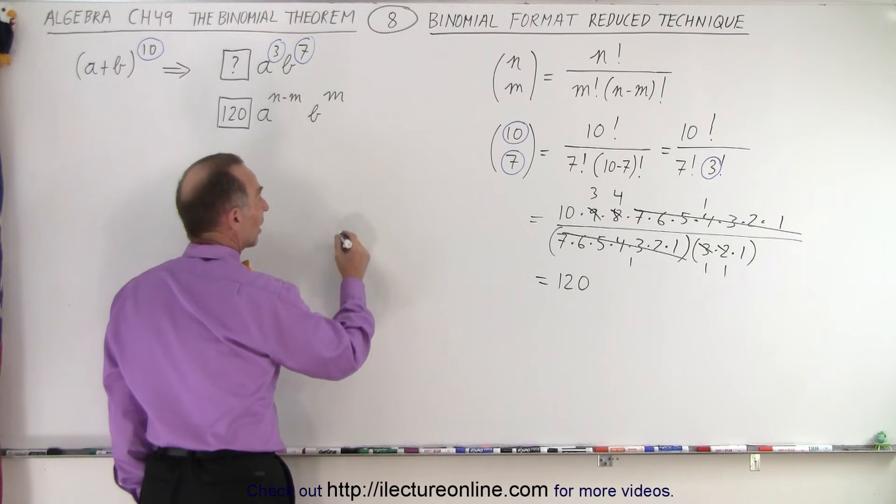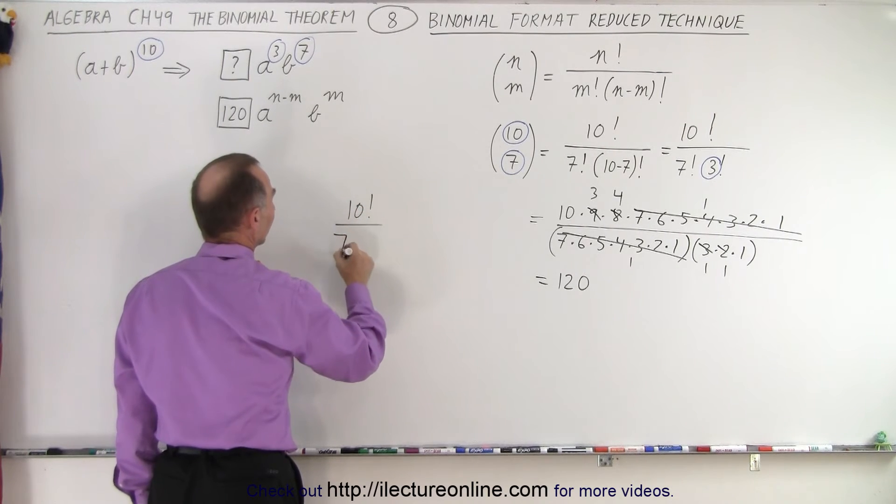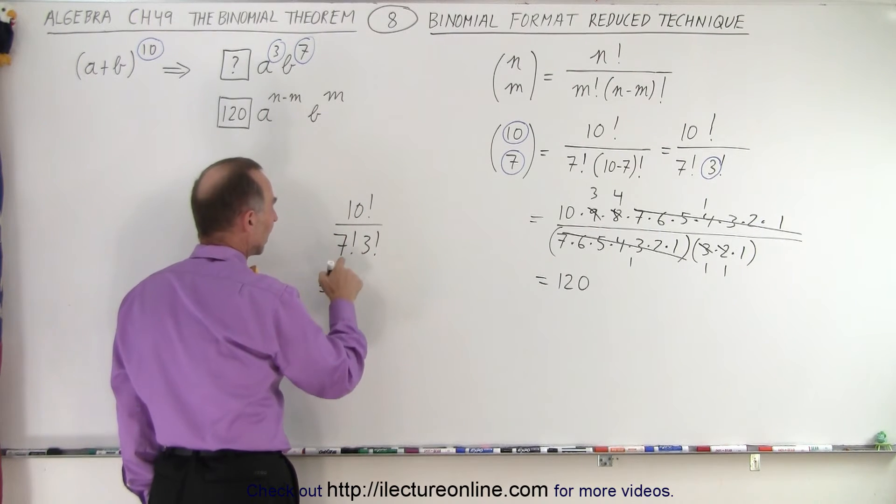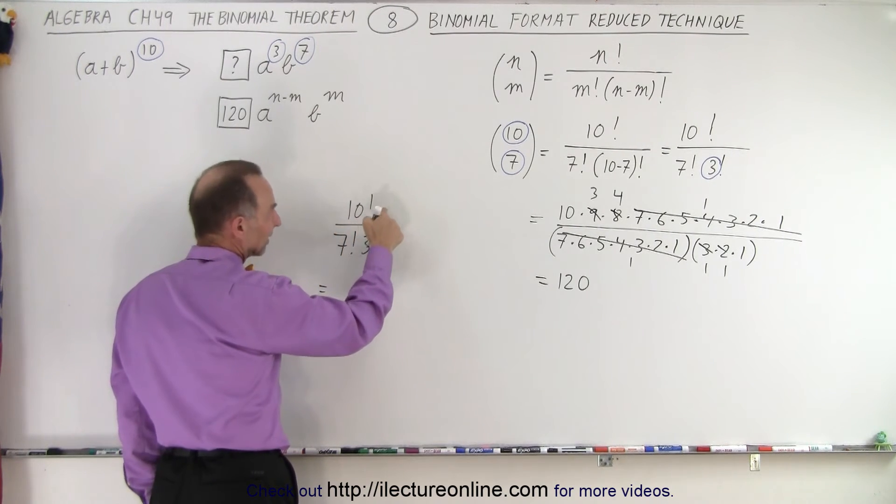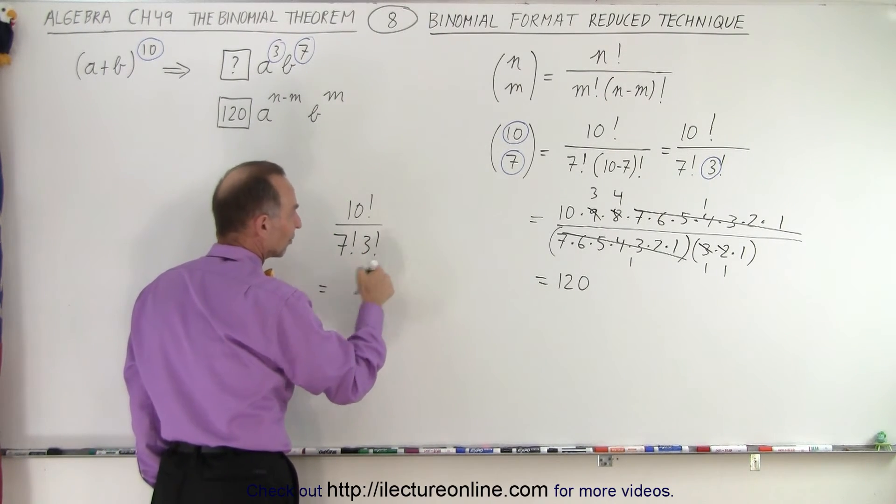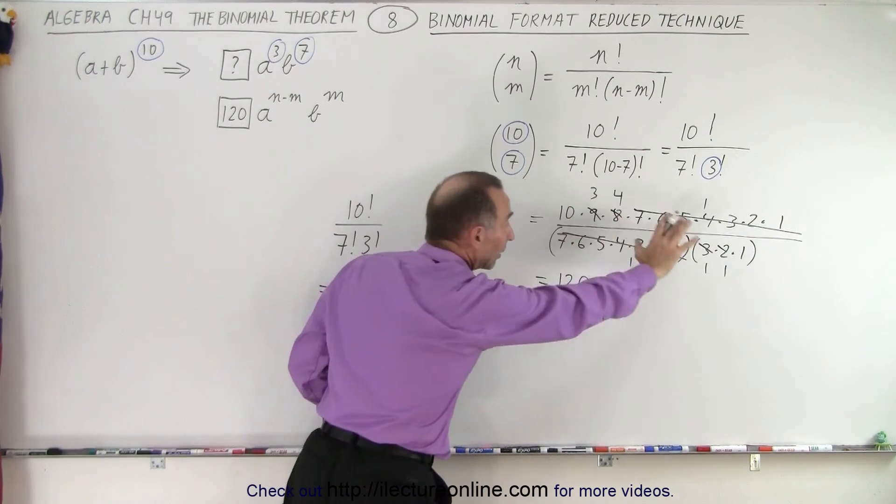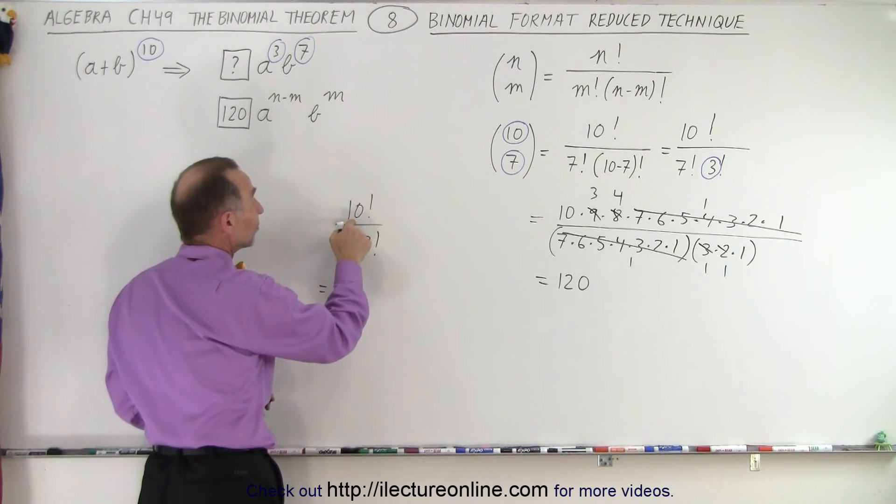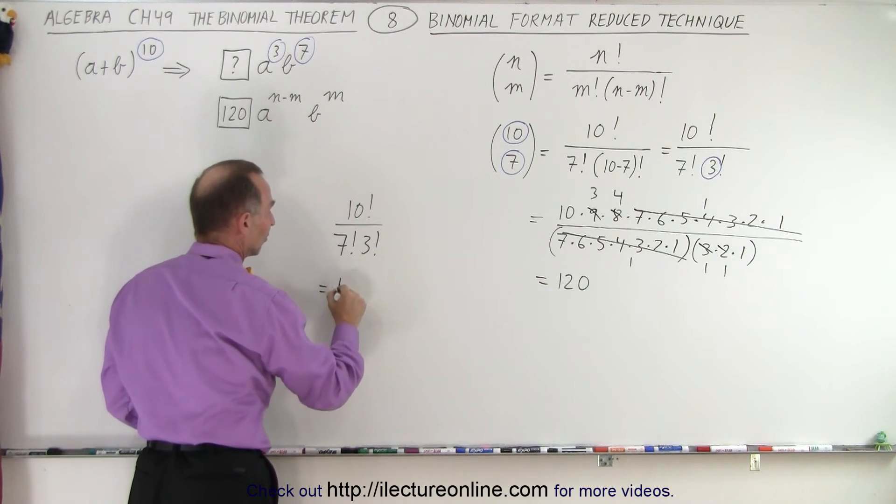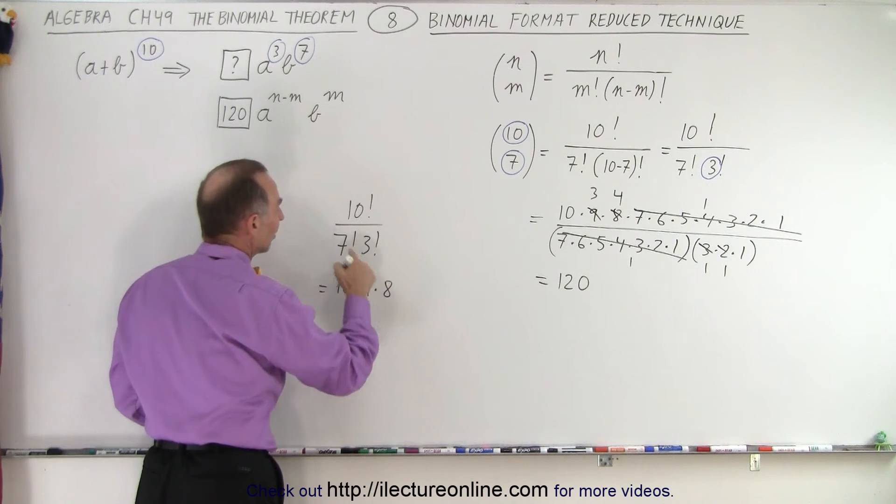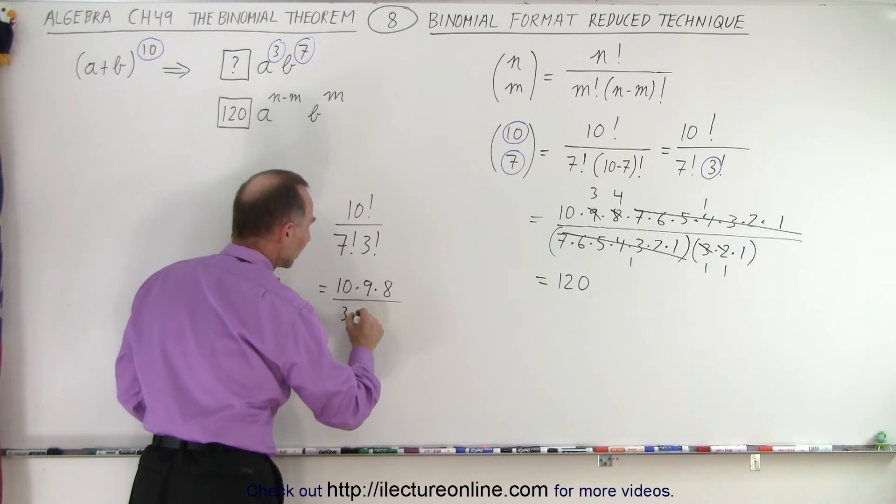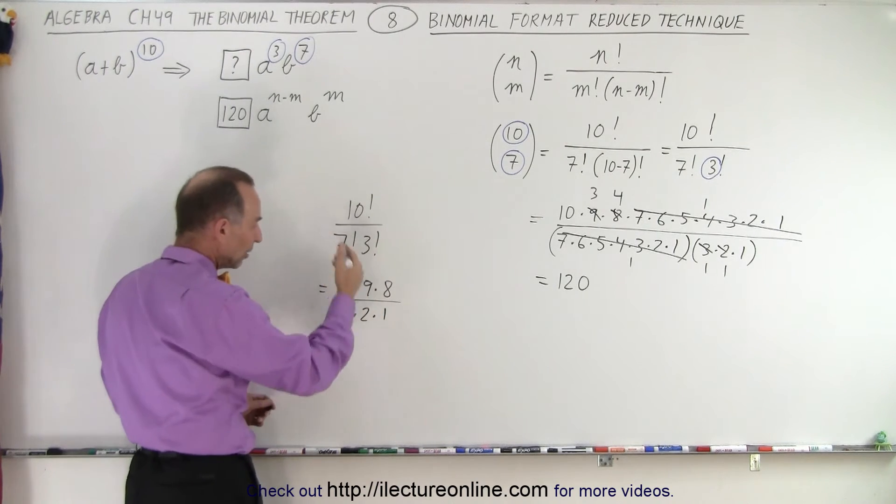Let's come up here and say 10 factorial divided by 7 factorial times 3 factorial. And sometimes you can just look at this and go, okay, I know that this is 10 times 9 times 8 times 7 all the way down to times 1. This is 7 times 6 times 5 times 4 times 3 and so forth. So sometimes without actually having to write it out, you could simply say that this gives me 10 times 9 times 8. Anything below that is cancelled out by this. So this is simply 10 times 9 times 8. That cancels out the 7 factorial, divided by 3 factorial, which is 3 times 2 times 1.